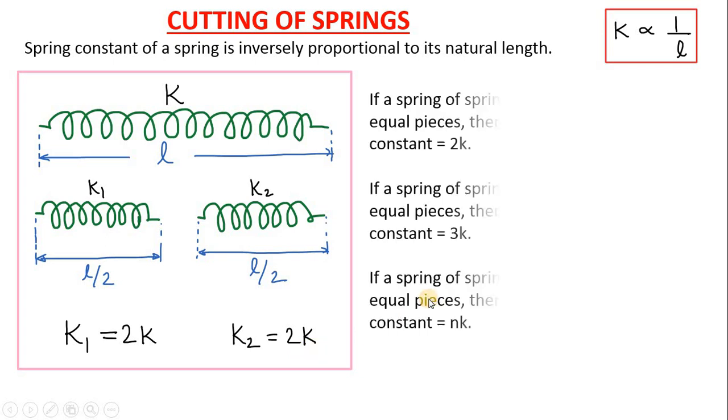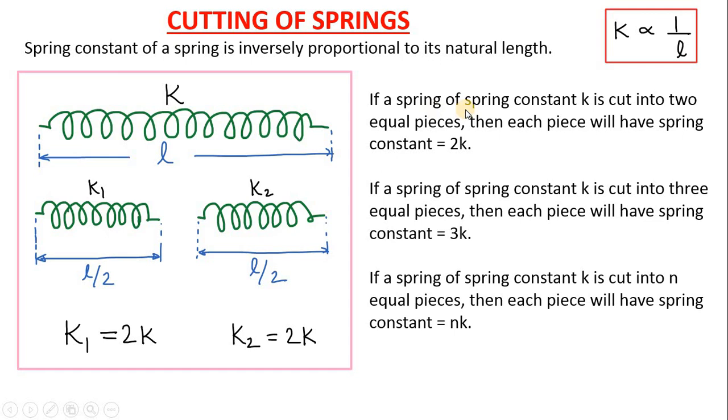This result can be summarized like this. If a spring of spring constant K is cut into two equal pieces, then each piece will have spring constant equal to 2K. And if a spring of spring constant K is cut into three equal pieces, then each piece will have spring constant 3K.